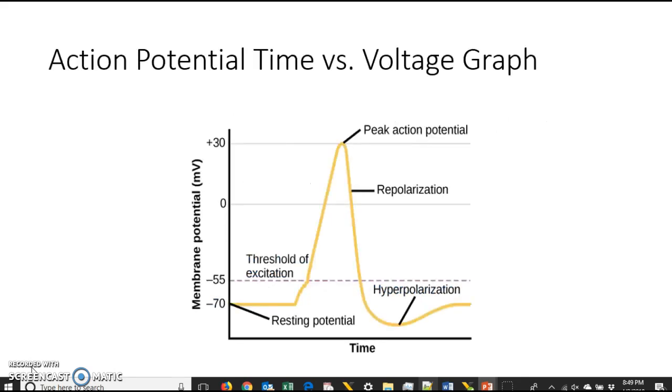Some of you may or may not know what the action potential is. The action potential is actually a change in electrical potential or voltage associated with the passage of a signal along muscles or along nerves.